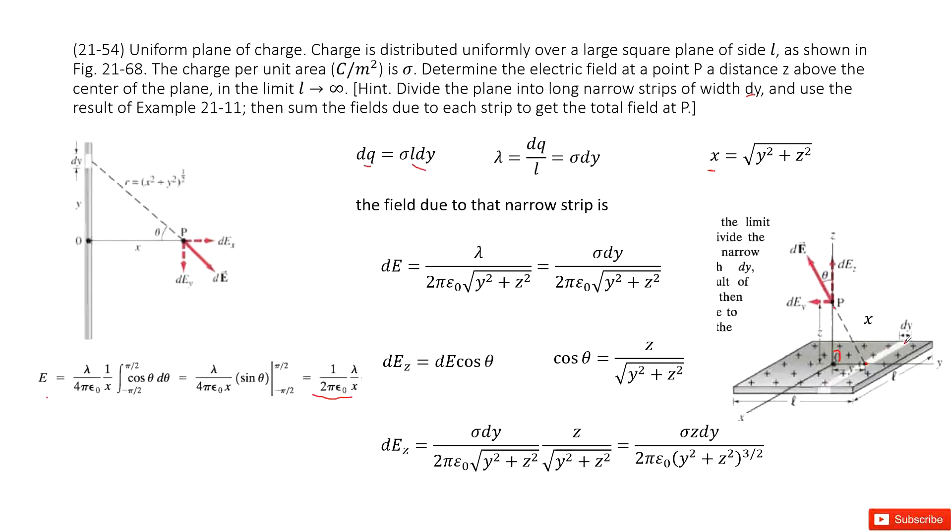And then how can you find the linear density for the wire? You use the total charge divided by length L. So it is sigma times dy.